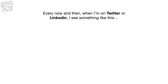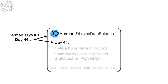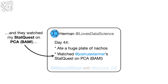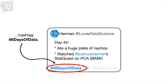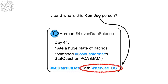Every now and then, when I'm on Twitter or LinkedIn, I see something like this. Herman says it's day 44, and they ate a lot of nachos, and they watched my StatQuest on PCA. Bam! Hashtag 66 days of data. And I'm like, what the heck is this hashtag 66 days of data thing?